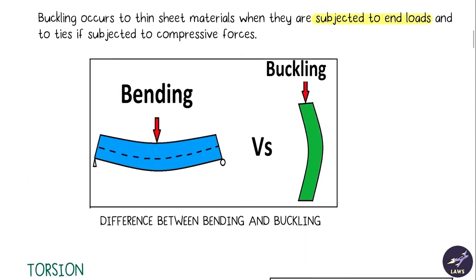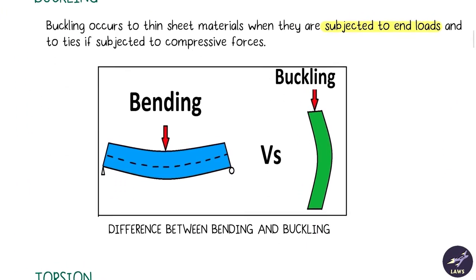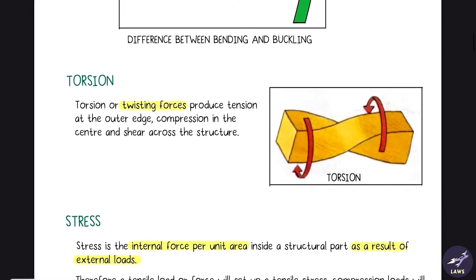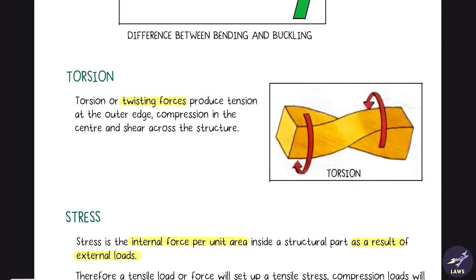Then we have buckling. What is the difference between bending and buckling? In bending the load is towards the center, and buckling is on the edge with end loads. Then we have torsion, which is basically just a twisting force.